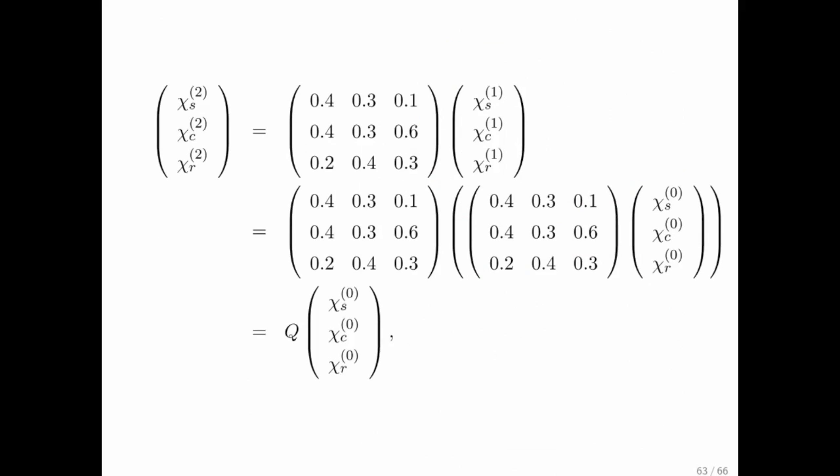Now, how would we do that? Well, we know that we want this vector for day number two, and we know that that's the transition matrix times the state on day one. So we get this right here. But we know how to compute what that vector is for day one from the vector for day zero.